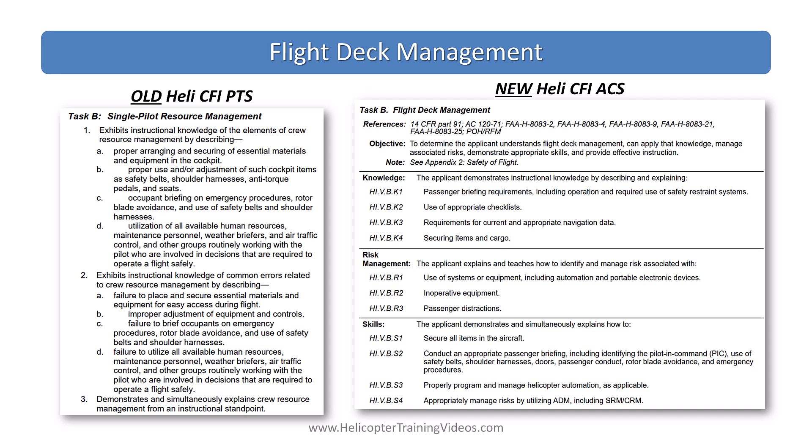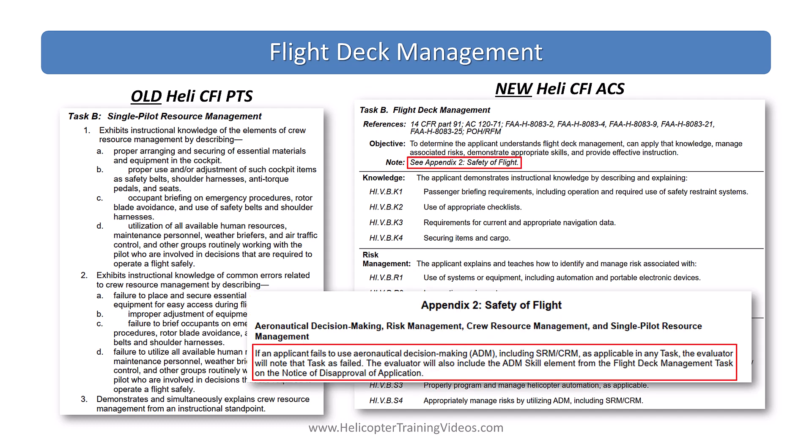Also the same as changes in the private and commercial ACS is the new flight deck management task, which essentially replaces any single pilot resource management task. The content itself is not too much different from SRM tasks, but for the CFI you have to teach this stuff and know the common errors. The big difference is that Appendix 2 safety flight says that if you fail ADM, aeronautical decision making, or SRM single resource management, or CRM crew resource management on any other task, that task will fail — but you also get a bonus fail: the flight deck management task will also be a fail. Strangely this isn't in the instrument ACS for some reason.